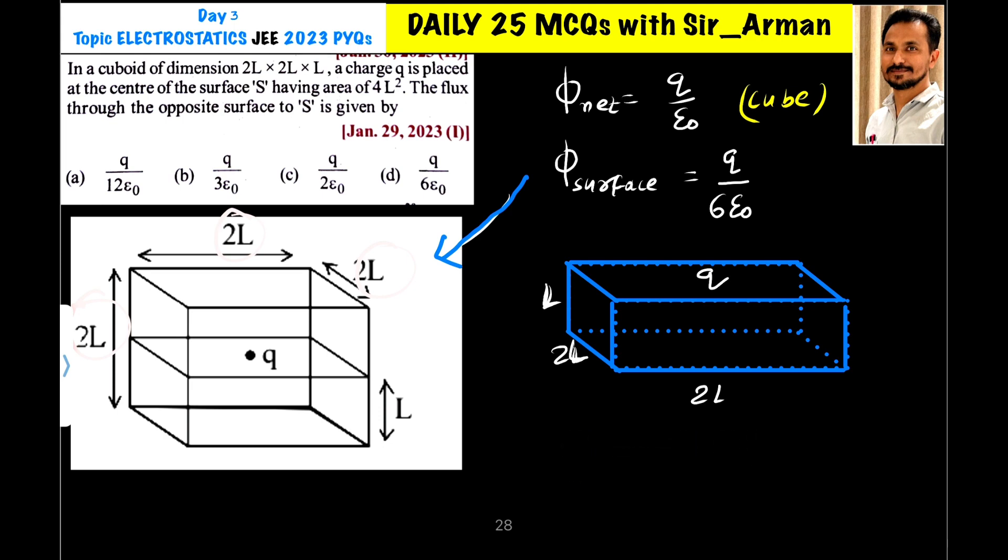The flux through the cube of side 2L is given by equation Q by epsilon 0. So here it is Q by epsilon 0.